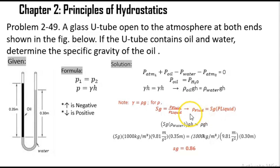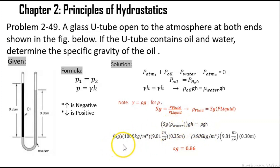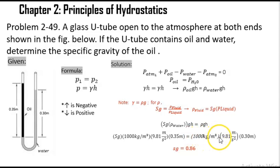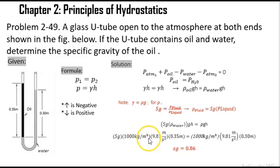Substituting into our equation, we have: Sg times density of water times gravity times height of oil equals density of water times gravity times height of water. Plugging in values: Sg times 1000 kg/m³ times 9.81 m/s² times 0.35 m equals 1000 kg/m³ times 9.81 m/s² times 0.30 m. Dividing both sides by 1000 kg/m³ times 9.81 m/s² times 0.35 m, we get the specific gravity of the oil, which is 0.86.